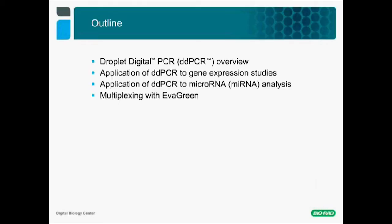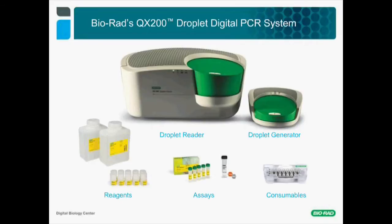Here is Bio-Rad's QX200 Droplet Digital PCR System. It consists of two instruments: the droplet generator and the droplet reader. Bio-Rad offers all the necessary reagents to perform digital PCR in droplets. The droplet generator uses a disposable DG-8 cartridge to simultaneously partition eight independent 20-µL reactions into 20,000 droplets each, all in about two minutes. The droplet reader instrument can read a full 96-well plate in about two and a half hours, allowing for broad sample throughput—from one to several hundred samples in a single workday.